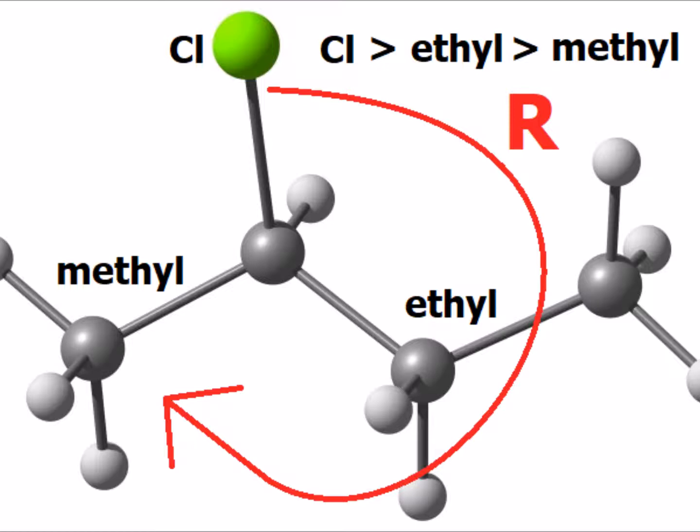We have already rotated the lowest priority group, the hydrogen atom, to the rear. Notice, once we've arranged the substituents this way, that the order of priority in descending order takes us in a clockwise direction. Therefore, this is the R isomer of 2-chlorobutane.